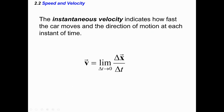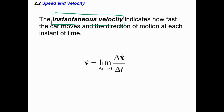For instantaneous velocity, you take the limit as delta t shrinks down — a very short displacement over a very short period of time. This is what we refer to as the instantaneous velocity. It's actually the reason Isaac Newton developed differential calculus, to better understand velocity and later acceleration. We won't go into how to calculate it — we'll just take short periods of time.